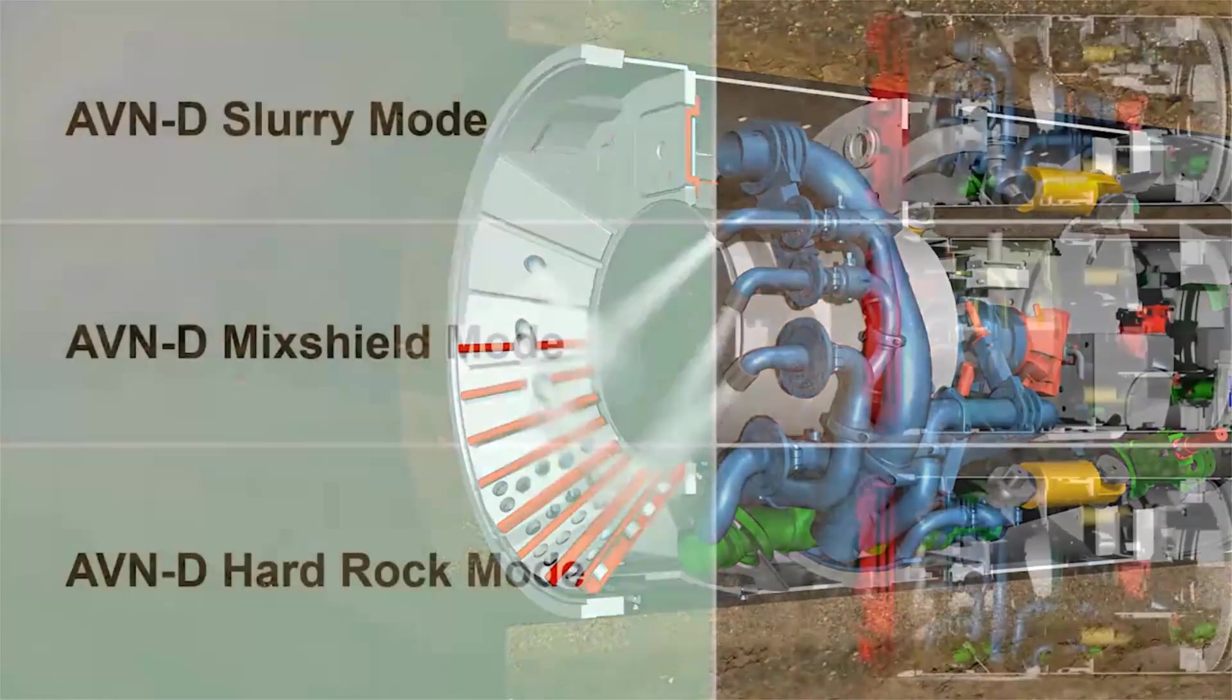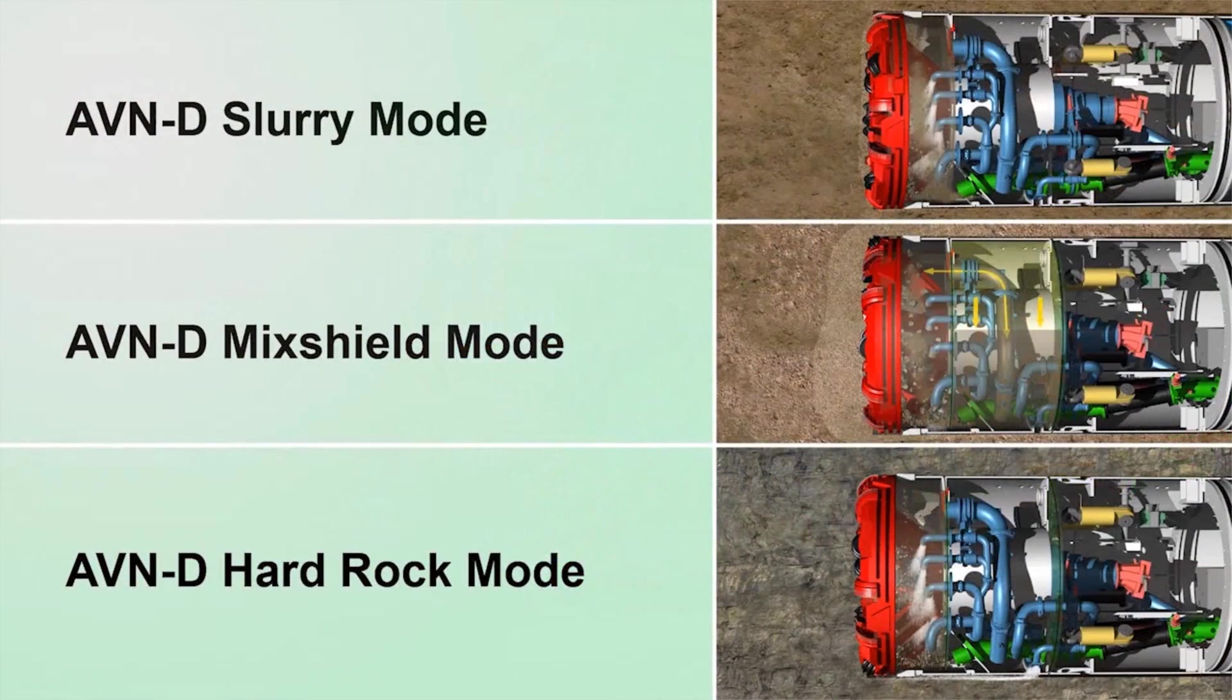The AVND machine concept allows the machine to switch at any time to one of three possible modes of operation: slurry mode, mixed shield mode, and hard rock mode, and thus adapt to the geology.